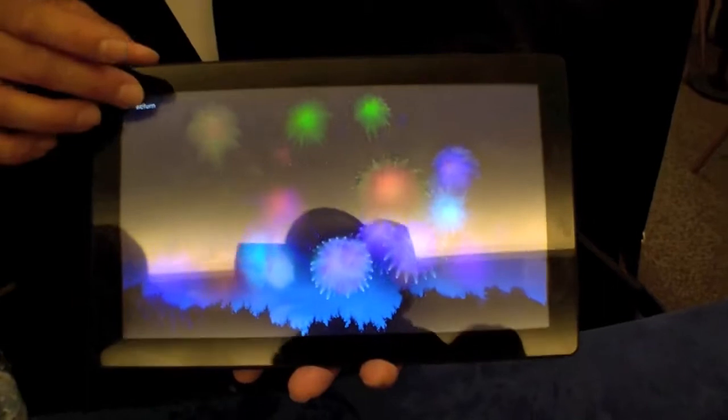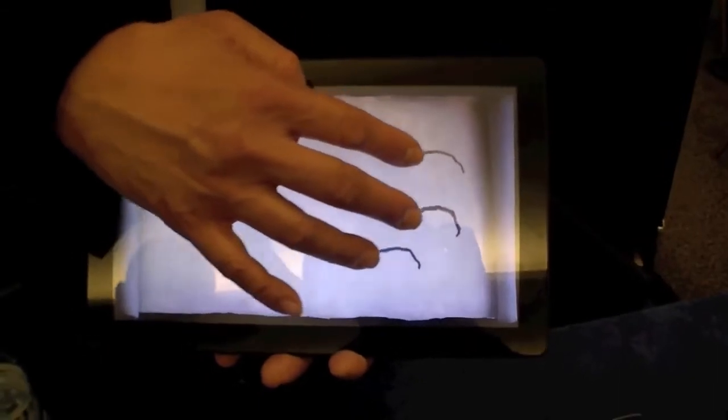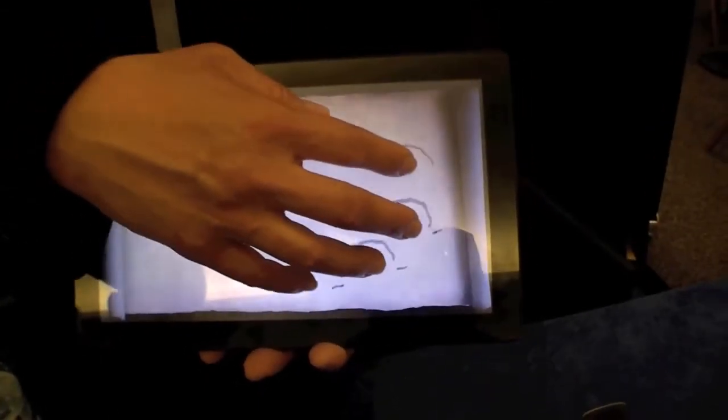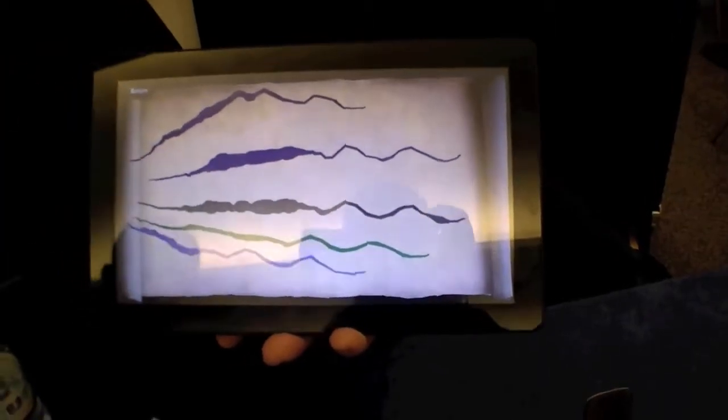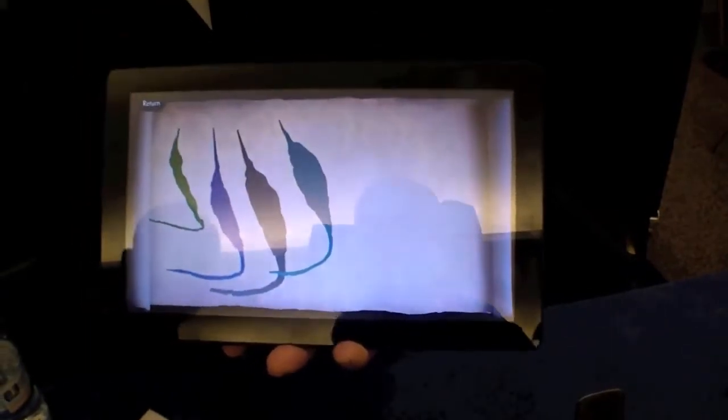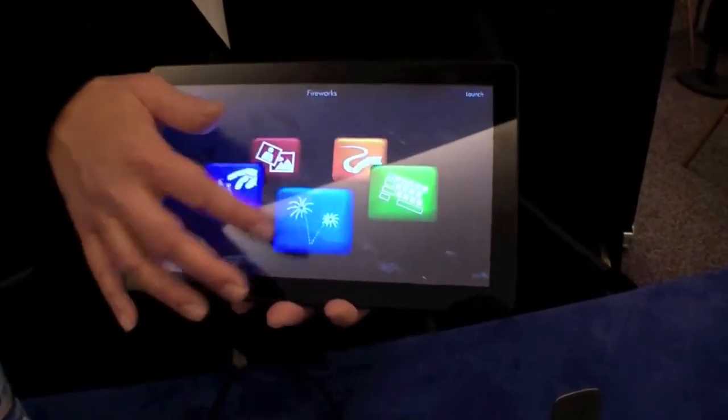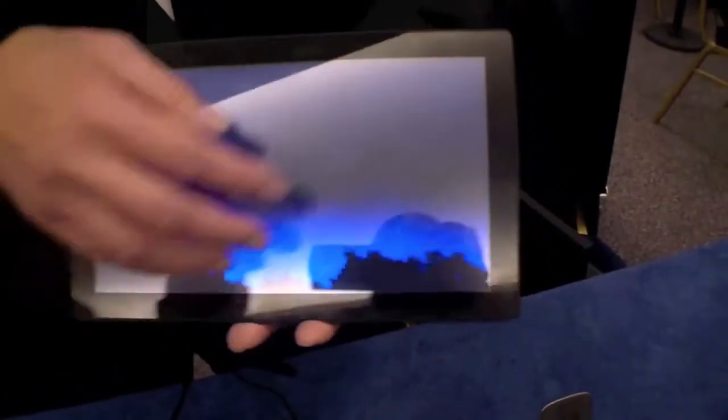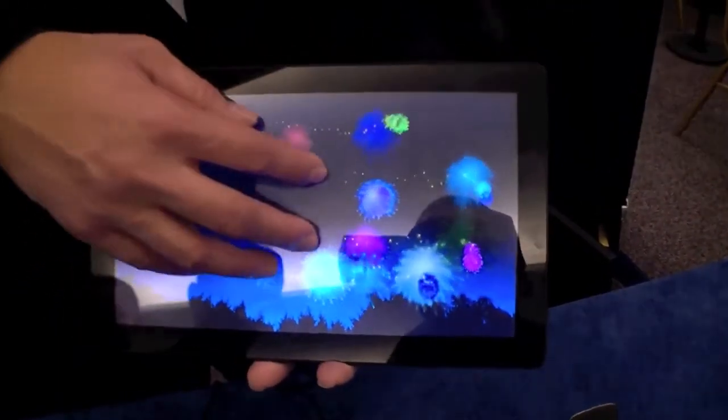What you see here is our Synaptics Series 7 demonstrator. This is showing full 10-finger tracking at about 80 hertz and it also does pseudo pressure. So the heavier my colleague pushes down on the screen, the darker the line. This demonstrator shows the full touch capability here.